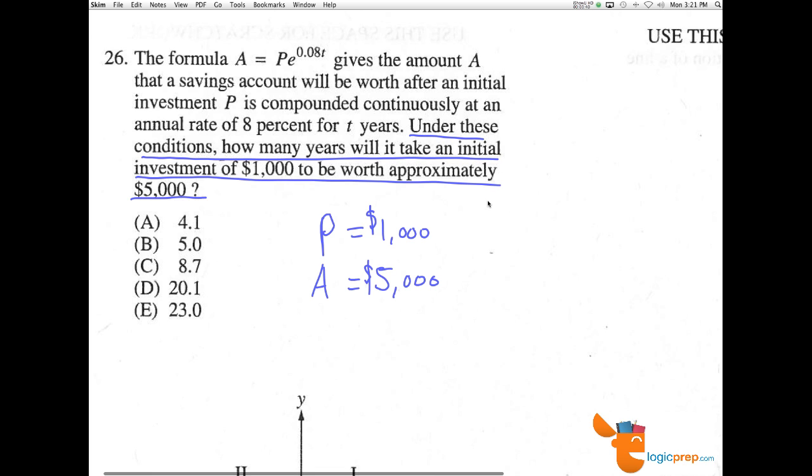They give us the equation A equals P times E to the 0.08T. T is our time. We can see 0.08 here represents this 8%, and we have the constant E.